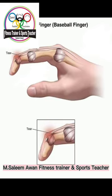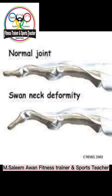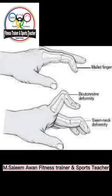Blood vessels mostly enter the scaphoid through both its distal and proximal ends. However, in 10 to 15% of cases, all blood vessels may supply the proximal segment by entering through the distal pole only. In such cases, if a fracture occurs at the waist of the scaphoid, the proximal part is deprived of blood supply and may undergo avascular necrosis, which is clinically very important.